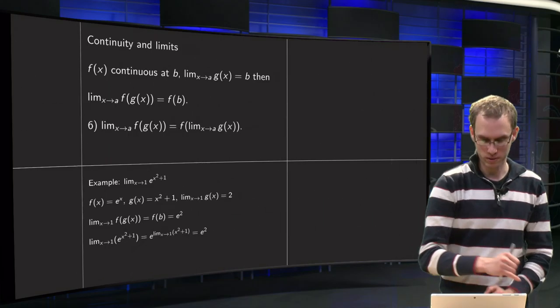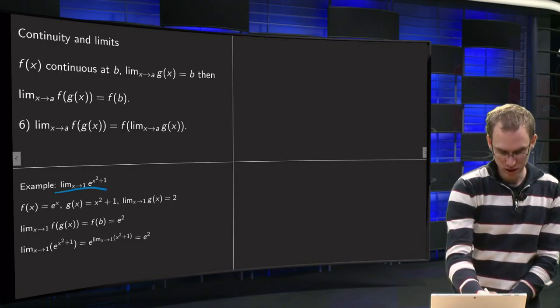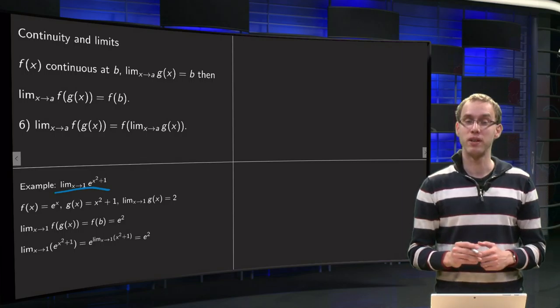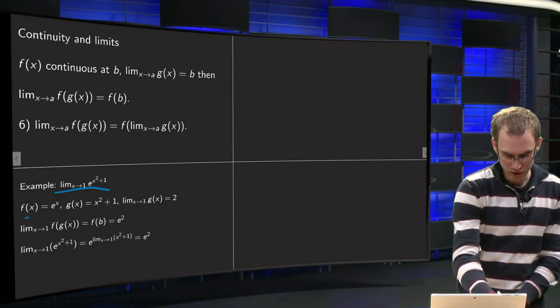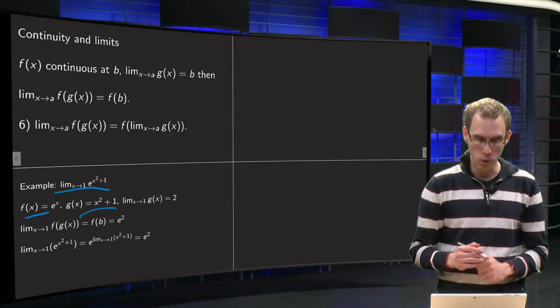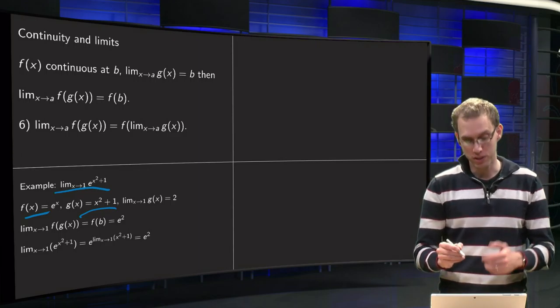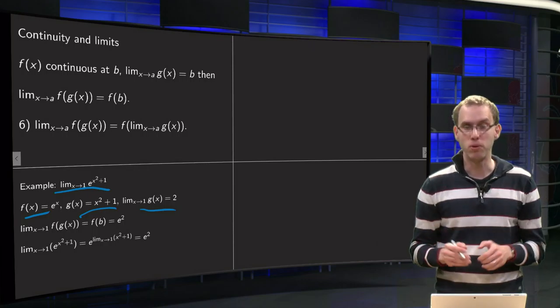So how does that work? For example, we take the limit x to 1 of the function e to the power x squared plus 1. e to the power something is continuous, so we set f(x) equals e to the power x, we set g(x) equals x squared plus 1, and we know if you take x to 1 of g(x) equals 2.